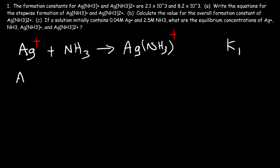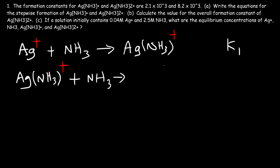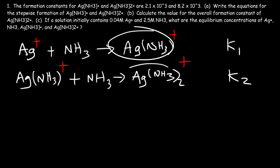Now we're going to take the intermediate AgNH₃⁺ and react it with another ligand, another NH₃ molecule. This produces the second complex ion, Ag(NH₃)₂⁺. The constant for this reaction is K2. That's how we write the equations for the stepwise formation of these two complex ions. Now part B.